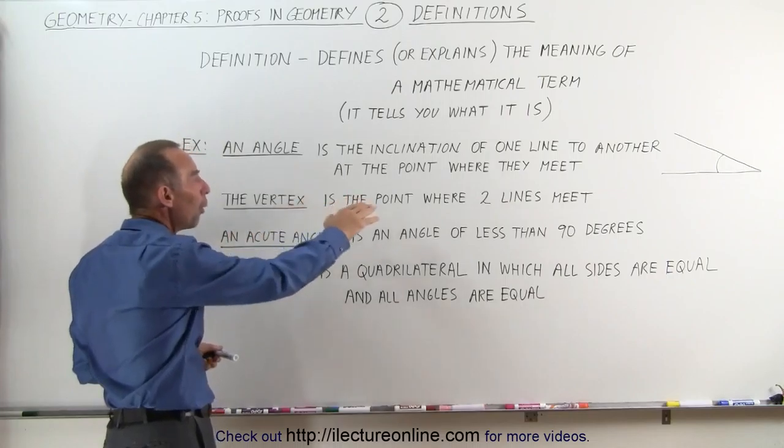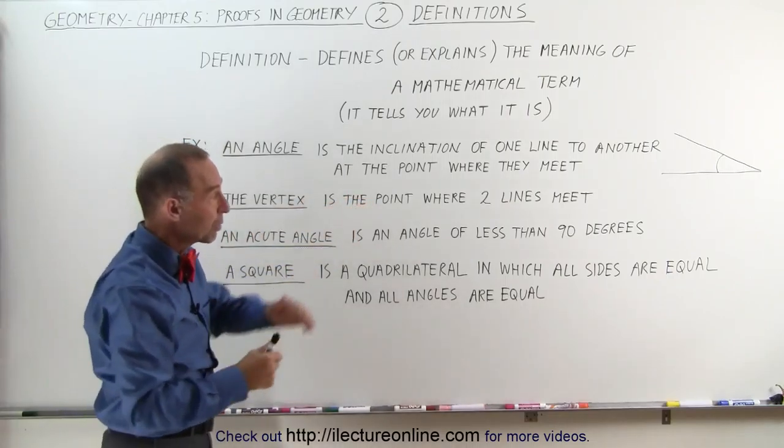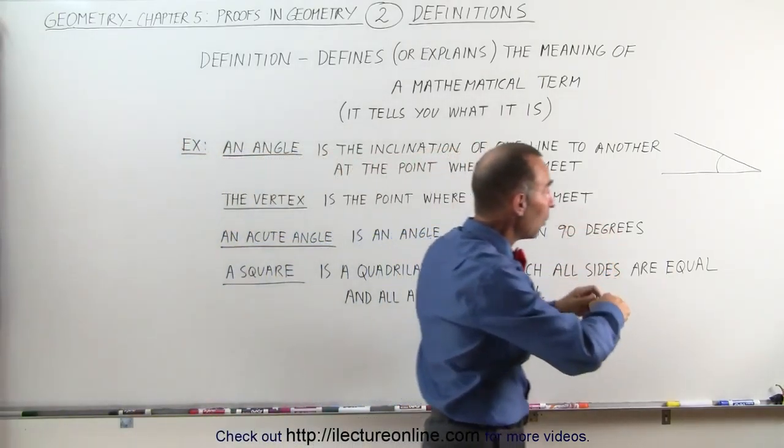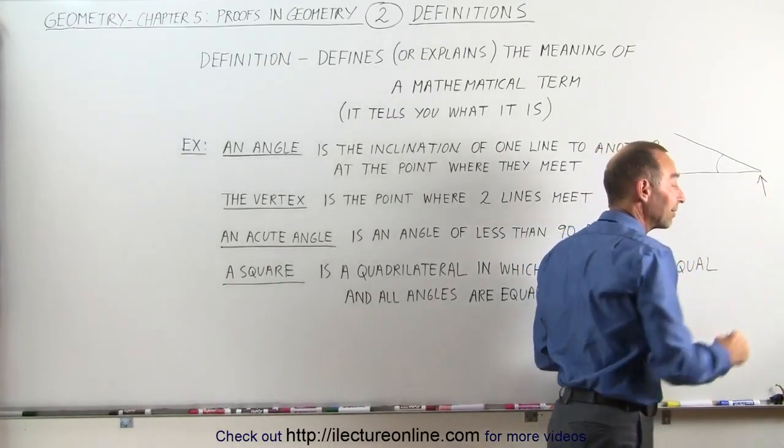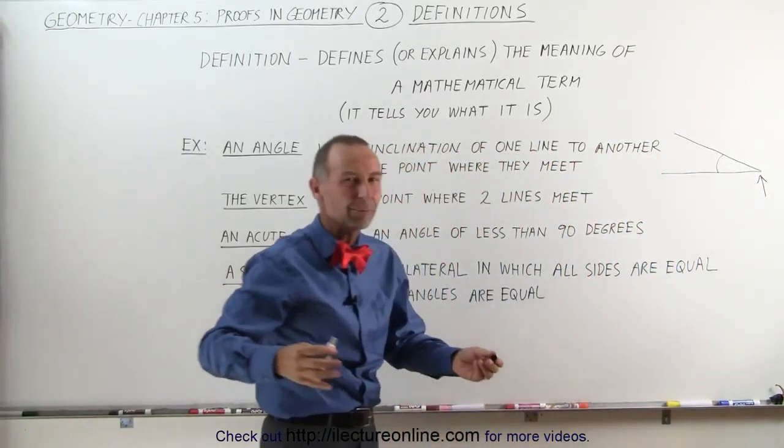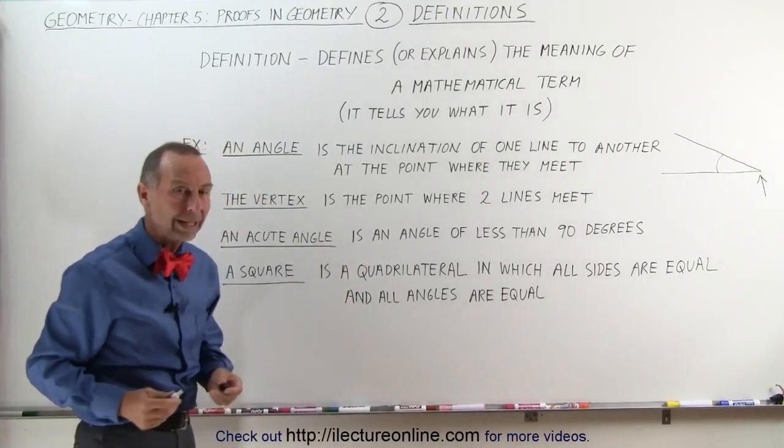The vertex is the point where two lines meet. Here we have two lines. They meet at a point. So this here is called the vertex. That's simply by definition. We don't need to prove it. That's just the way it is.